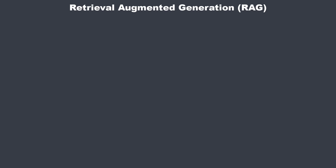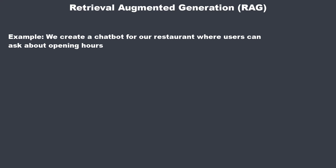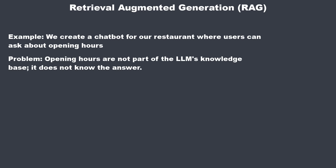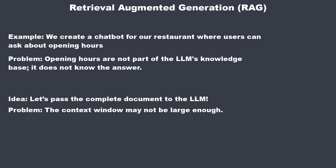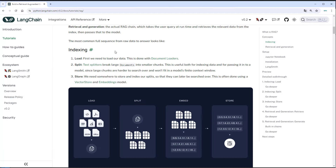Now let's dive into the most complex part of this crash course: RAG, short for retrieval augmented generation. Why do we even need RAG? Let's say we want to build a chatbot that allows users to ask questions about our newly opened restaurant — opening hours, food, and so on. This knowledge was never trained into the model. We could pass the complete information to the LLM, but that's expensive, and many models have a so-called context window — the maximum amount of words or tokens the LLM can handle — that may be smaller than the document size. And if we have gigabytes of data, we need a different approach. This is why RAG was introduced.